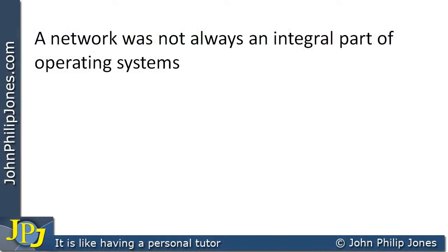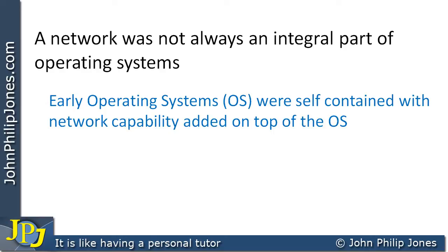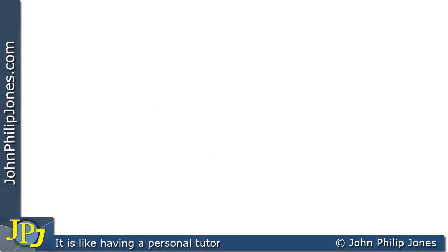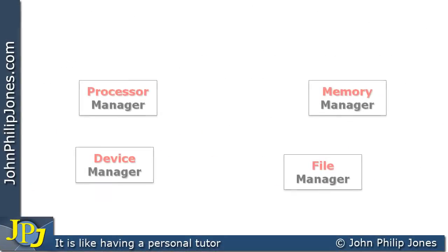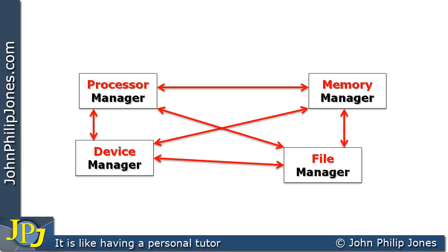A network was not always an integral part of an operating system. Early operating systems were self-contained, with network capability added on top. Many modern operating systems now have a network manager in addition to the managers we've already looked at, so we could say that modern operating systems have five managers: the process manager, memory manager, device manager, file manager, and now this fifth one.